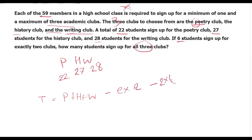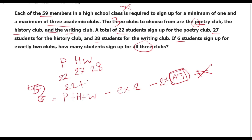Total equals P plus H plus W minus exactly two, minus two into all three. So 59 equals 27 plus 28 minus exactly 6, minus two into all three. I can tell it's solvable.